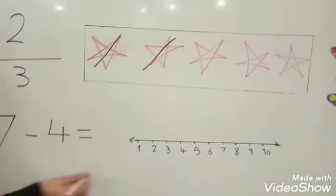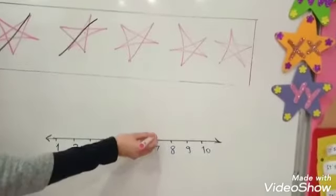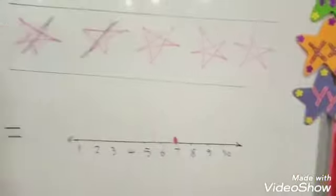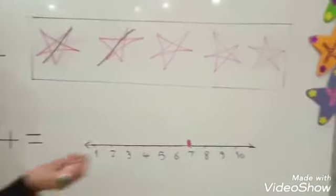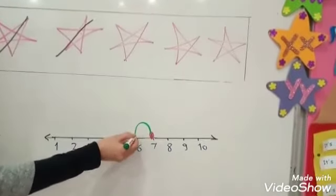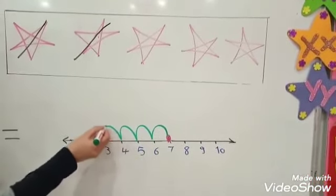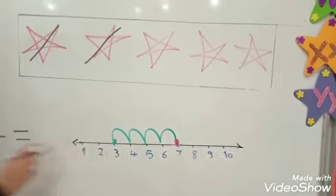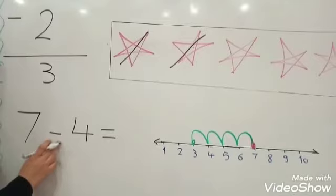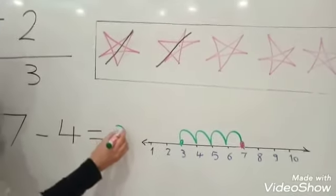First step. We will stop on 7. And we will jump backwards 4 numbers. 1, 2, 3, 4. We stop on number 3. So 7 minus 4 equal 3.